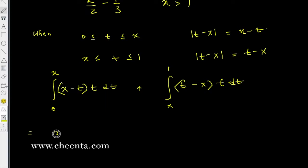Now let's compute the integrals. This will be x times t square by 2 minus t cube by 3 from 0 to x, and this one would be from x to 1, it would be t cube by 3 minus x times t square by 2 from x to 1.